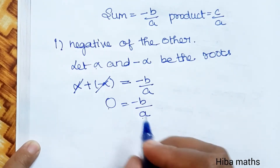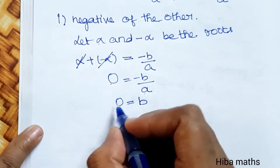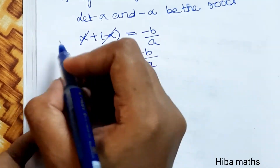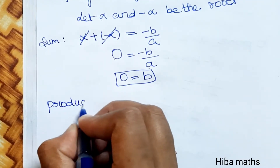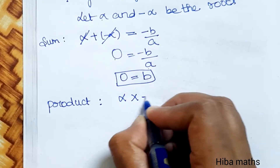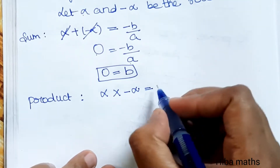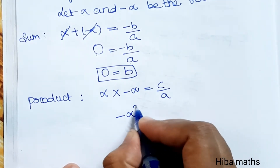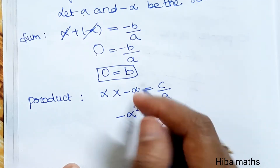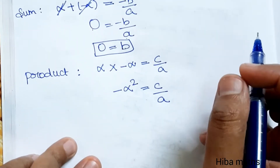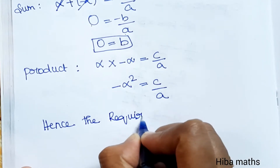From 0 = -B/A, multiplying both sides by A gives B = 0. For the product: α × (-α) = C/A, so -α² = C/A.